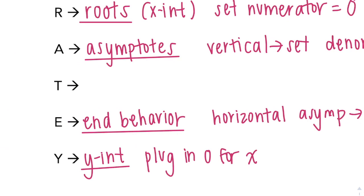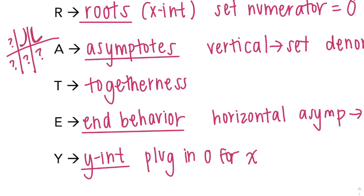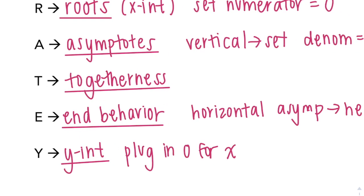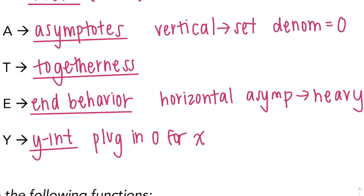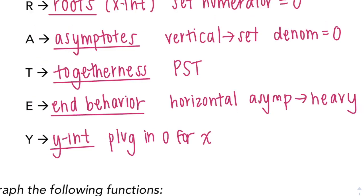And then T is togetherness. We talked about in the last video about the kind of quadrants, how you have like six sections like that. Is it here, or here, or here, or here? Togetherness is when you would have a section like right there and they would do this, or something like that, where they're coming together. So T stands for togetherness. Togetherness only happens if you have a PST in your denominator. So I'm just going to write PST and we'll do one here in a second.